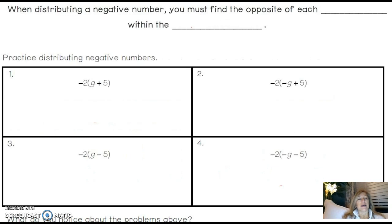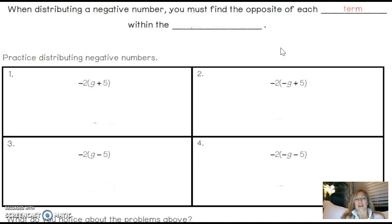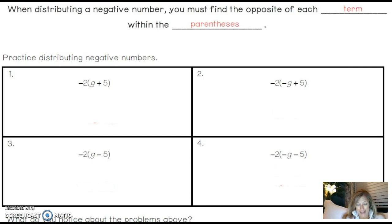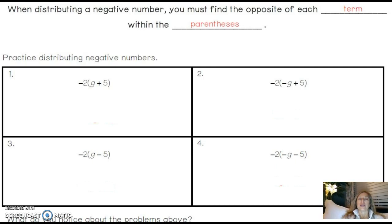Keep that in mind as we move on. When distributing a negative number, you must find the opposite of each term within the parentheses. So if we have a negative number outside the parentheses — only when you have a negative number outside the parentheses — that means you have to take the opposite of each term within the parentheses.